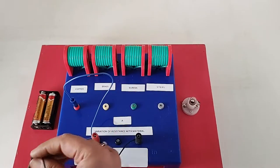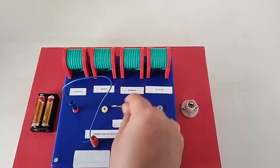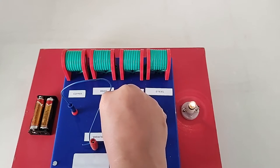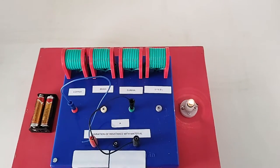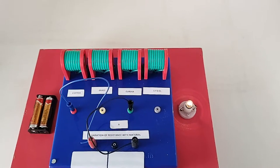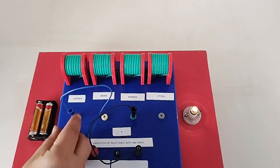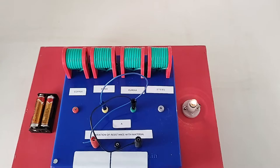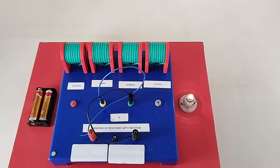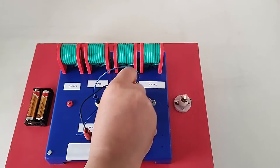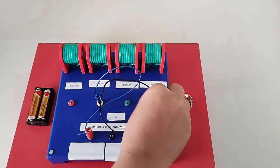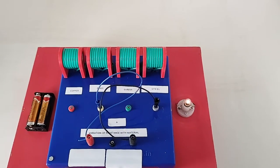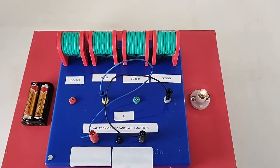Now what am I changing? I am changing the material. As the material changed from copper to brass, you can see the glow of the bulb has decreased. Now if I change the material more, the glow of the bulb will decrease more.